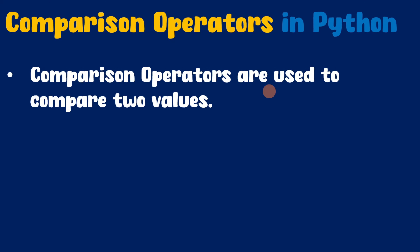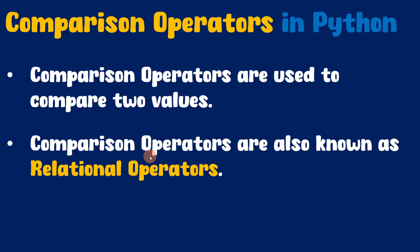Comparison operators are used to compare two values. So when we need to perform comparison operation between two values, we can use comparison operators. Comparison operators are also known as relational operators, so you can refer to comparison operators as relational operators. They are exactly the same.